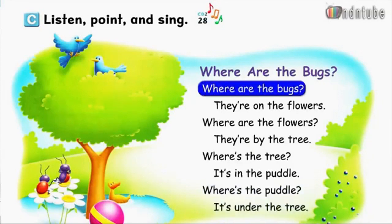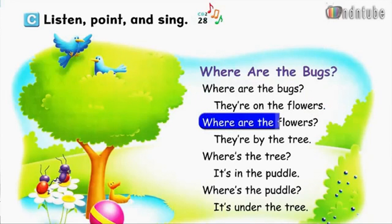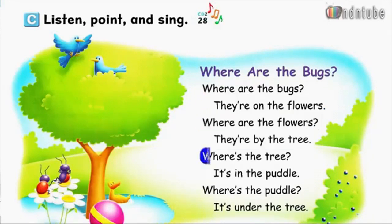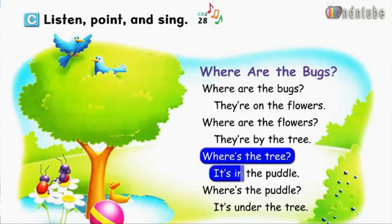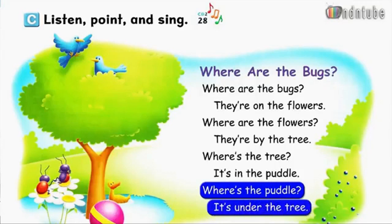Where are the bugs? They're on the flowers. Where are the flowers? They're by the tree. Where's the tree? It's in the puddle. Where's the puddle? It's under the tree.